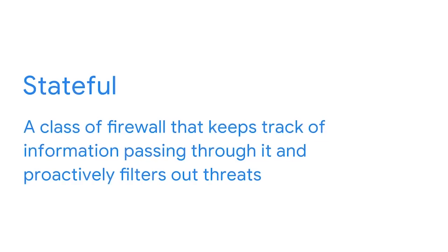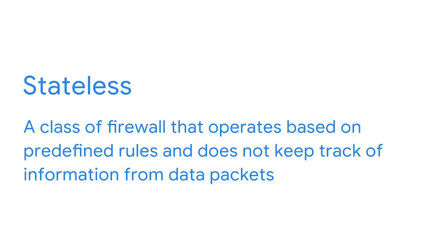All the firewalls we have discussed can be either stateful or stateless. The terms stateful and stateless refer to how the firewall operates. Stateful refers to a class of firewall that keeps track of information passing through it and proactively filters out threats. A stateful firewall analyzes network traffic for characteristics and behavior that appear suspicious and stops them from entering the network. Stateless refers to a class of firewall that operates based on predefined rules and does not keep track of information from data packets. A stateless firewall only acts according to pre-configured rules set by the firewall administrator.